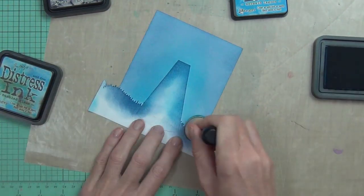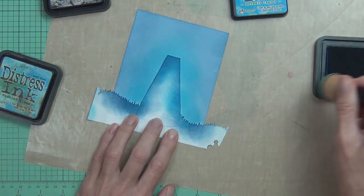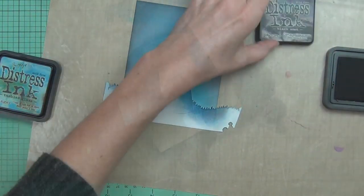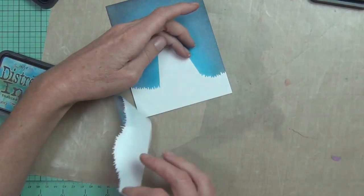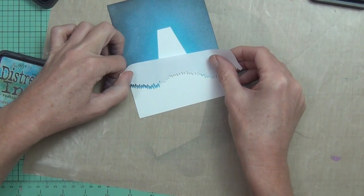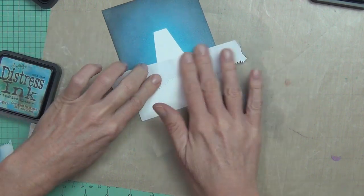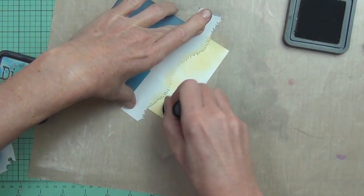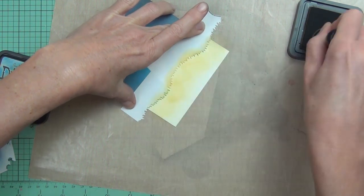I've used the stamp mask paper here. I did cut some grass from the Landscapes die set from Altenew, and I kept both sides of the mask so I can put the reverse side over top and then actually blend out some green for my grass.